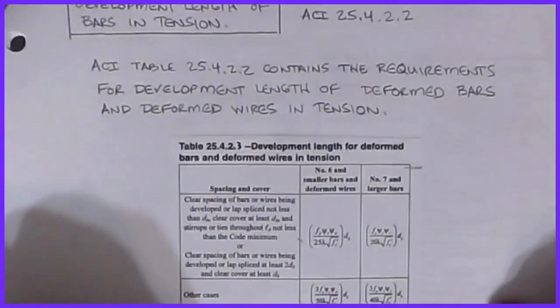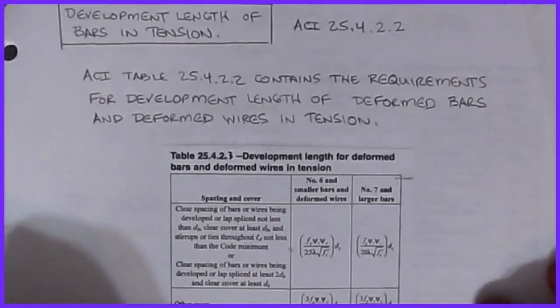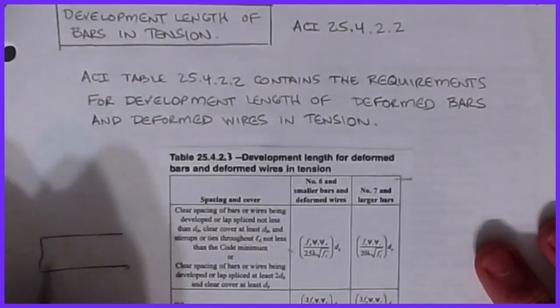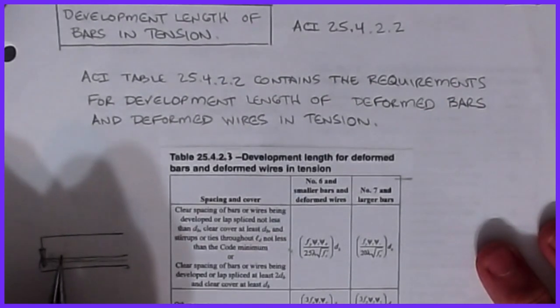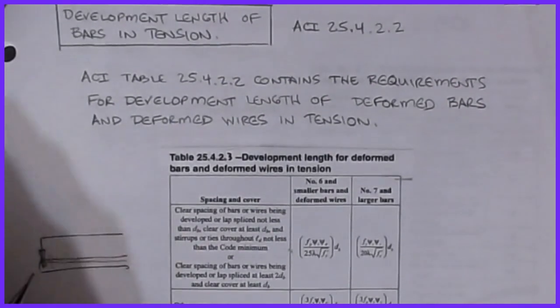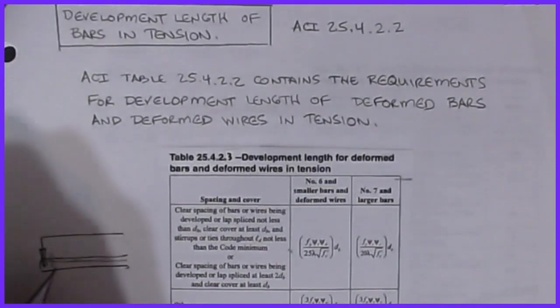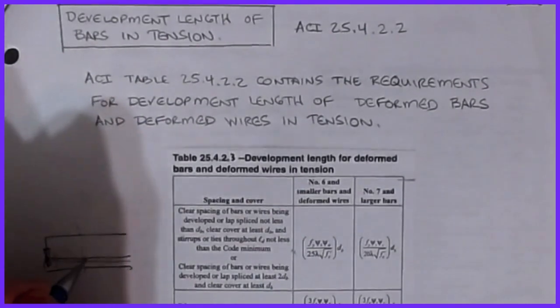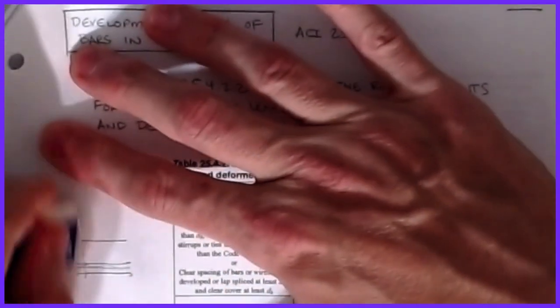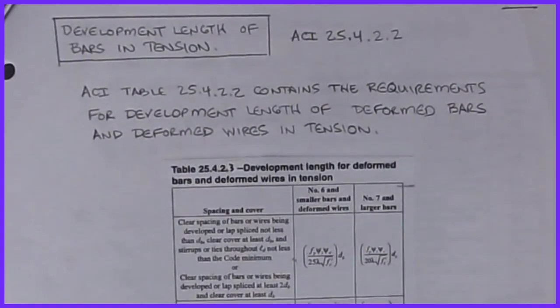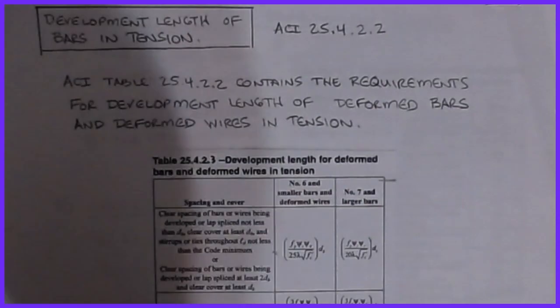Development length is required for bars in compression and bars in tension. If I took a bar all the way to the end of a beam and welded a plate on the end, I'd get huge bearing forces and could reduce the required ld to essentially zero. Sometimes with really high loads or very large bars, I have to do that — especially when I need a high tensile force very close to the end of the bar and don't have enough room for development length.